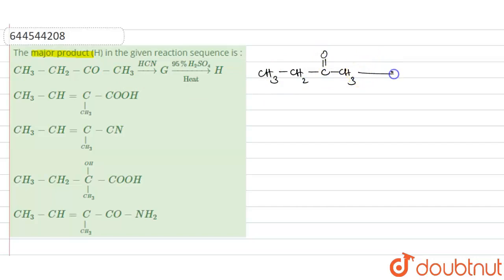it gives the corresponding cyanohydrin that is CH3, CH2, C, OH, CN, CH3. Then this is the compound G.